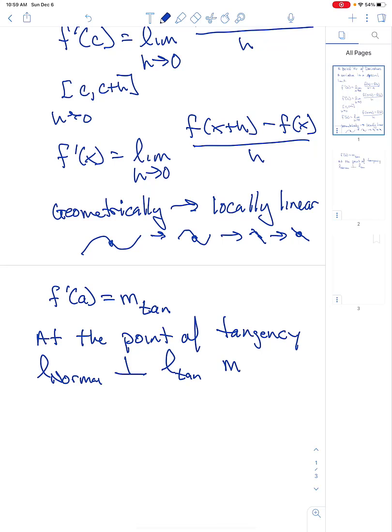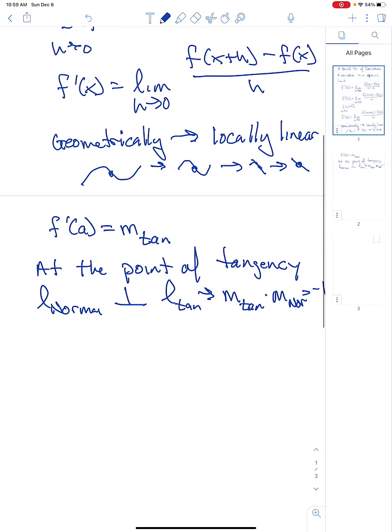Now, at the point of tangency, the normal line is perpendicular to the tangent line. So that means, as long as you don't have a horizontal or vertical line, the product of the slopes is negative one. Many of you like to say they're opposite reciprocals.